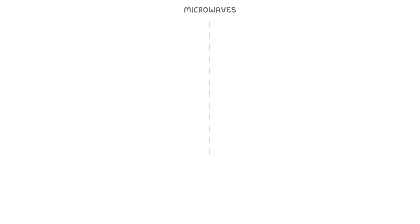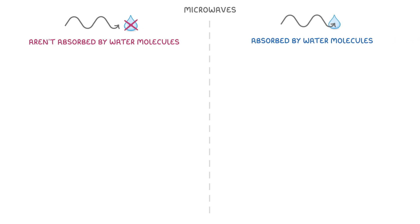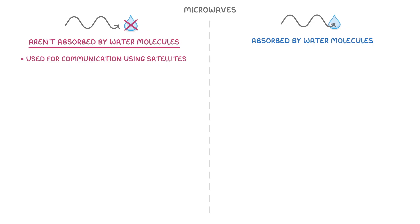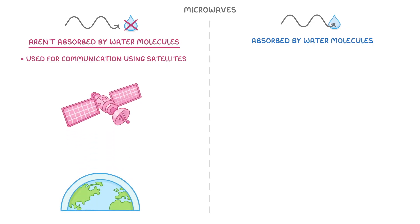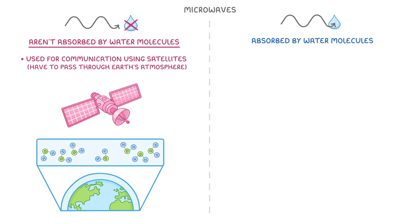If we start with microwaves, we can loosely split them into two different groups: those that aren't absorbed by water molecules, and those that are absorbed by water molecules. The ones that aren't absorbed by water molecules are used for communication using satellites. Because satellites are so far above the Earth, the microwaves have to pass through the Earth's atmosphere, which they wouldn't be able to do if they were absorbed by water molecules, because there's lots of water in our atmosphere.